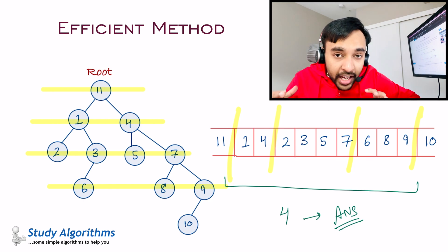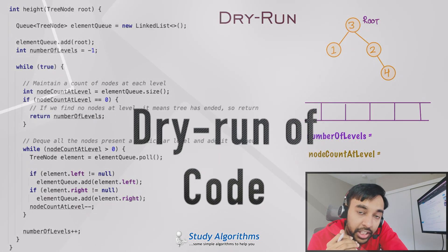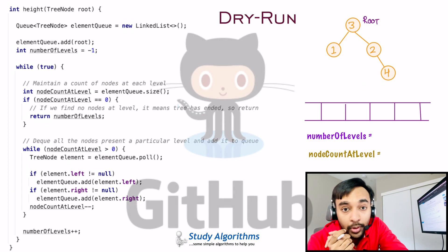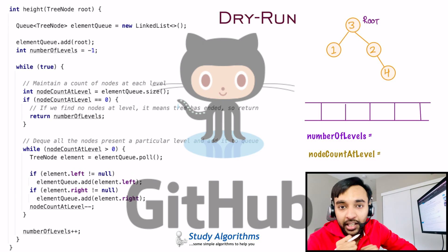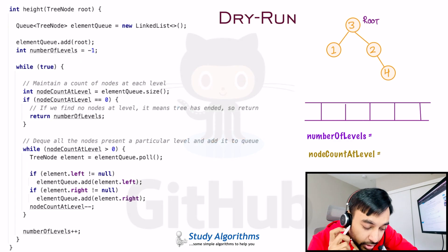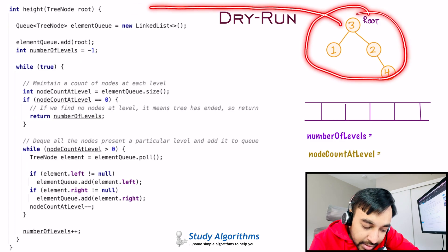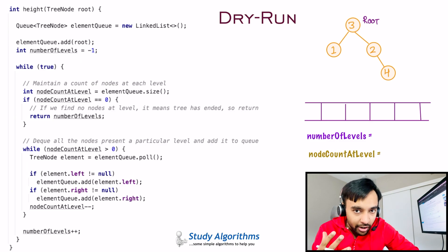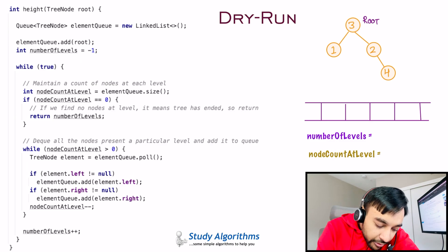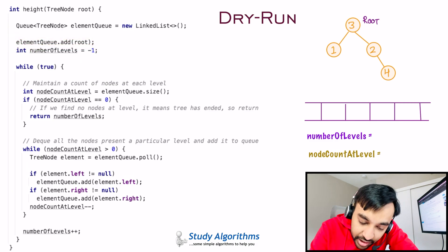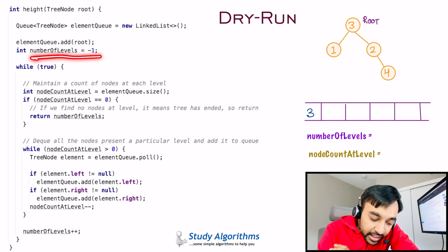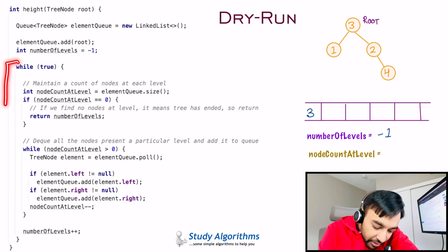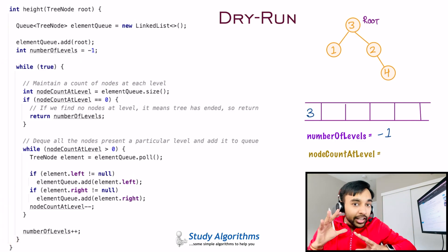Let us do a dry run of the code and see how you can implement this solution. On the left side of your screen you have the actual code, and on the right I have a sample tree that we will try to find the height of. The complete code and its test cases are available on my GitHub profile — you can find the link in the description below. To start off, the root of this binary tree is passed in as an input parameter to the function. Next, we create a queue that will store all elements while doing a level order traversal, and we add the root element to the queue.